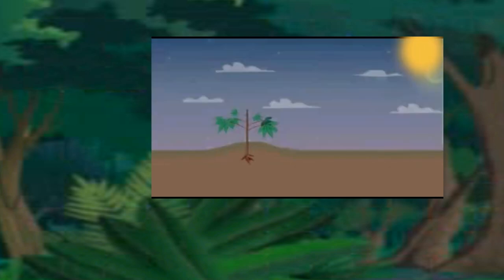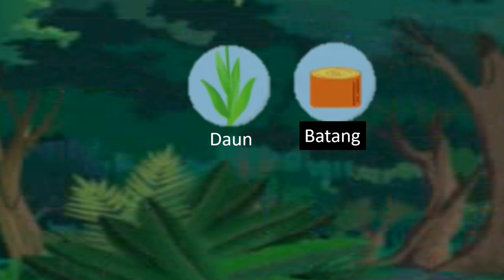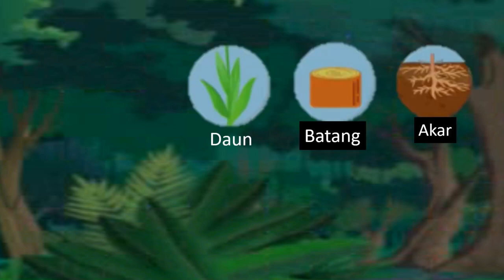Stek itu dilakukan dengan memotong atau memisahkan suatu bagian tanaman dari tanaman induk kemudian ditanam untuk menghasilkan individu baru. Stek bisa dilakukan dengan menggunakan bagian tumbuhan berupa daun, batang, sampai akar.